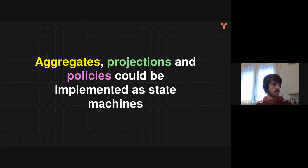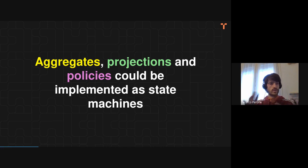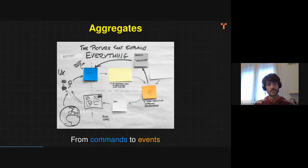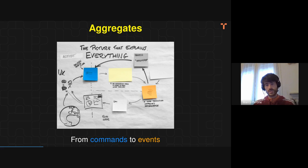That's the point where my interest in state machines began — because we have a way to represent entirely an application domain, composed of several parts, and all of them could be implemented as state machines. So state machines play a huge role if you model your domain with this kind of architecture. Aggregates are basically state machines — stateful processes that consume commands coming from the user and produce events, which are state changes of your data.